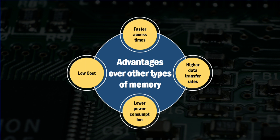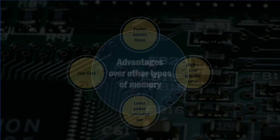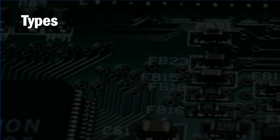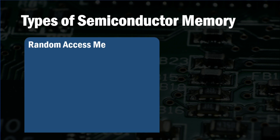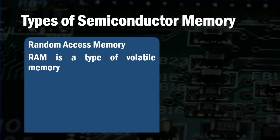The semiconductor main memory subsystem includes a critical component of a computer system that stores and retrieves data and instructions needed by the processor to perform tasks. Now let's look at the different types of semiconductor memories.